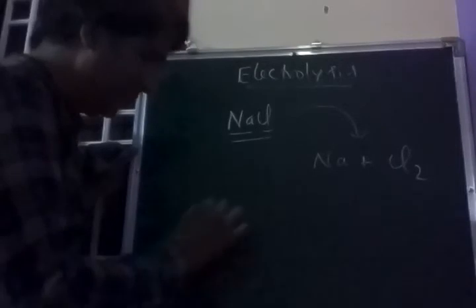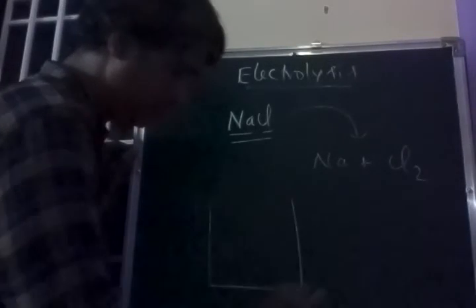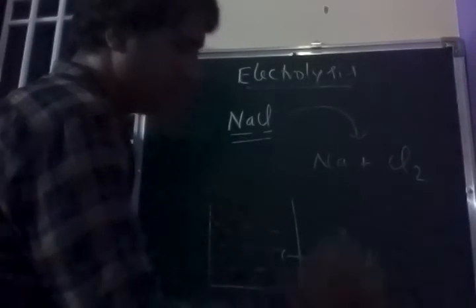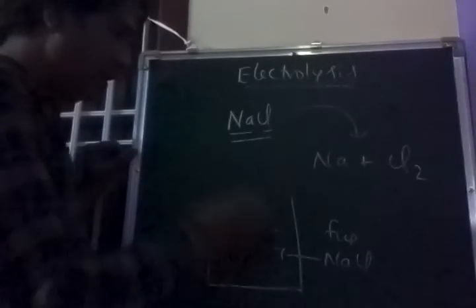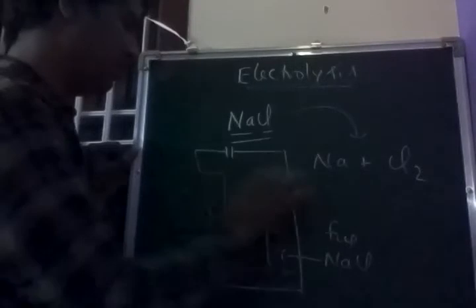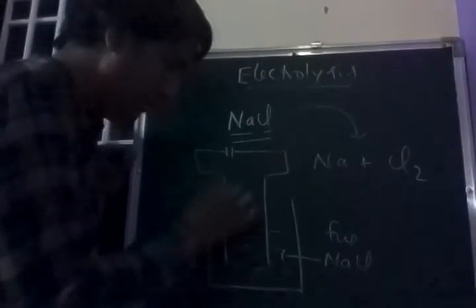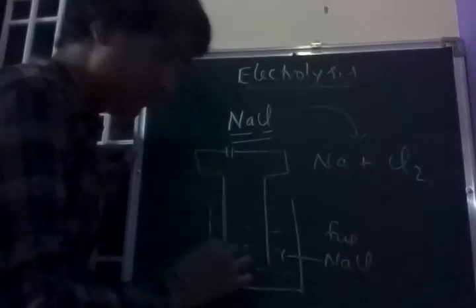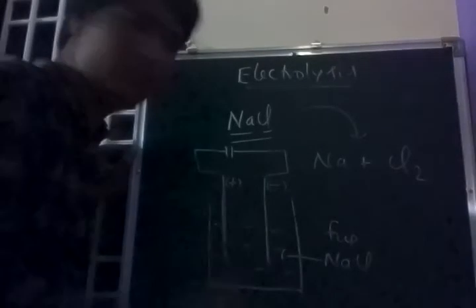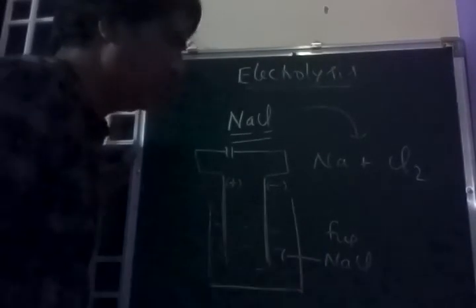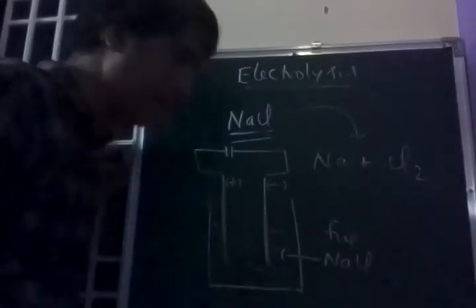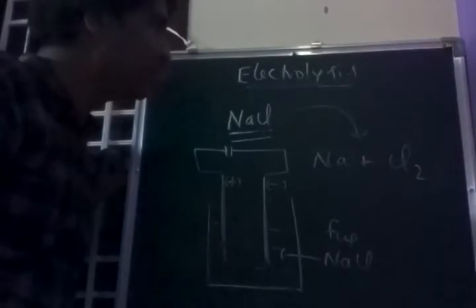Fused NaCl is taken in an electrolytic cell. Electricity is passed by using two metal rods. The metal rod which conducts electricity and contains positive charge is called the anode; negative charge is called the cathode. The process of decomposition of an electrolyte into constituent elements by passing electromotive force (EMF) is called electrolysis.